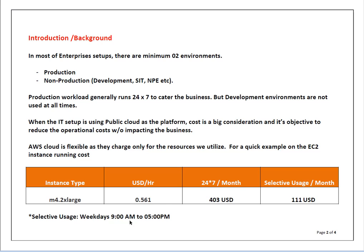Amazon cloud is very flexible as they charge only for the resources we utilize. For a quick example, on one EC2 instance type I have chosen M4.2xlarge. The per-hour cost of M4.2xlarge is 0.561 US dollars. If I calculate it monthly when my instance runs 24 by 7, it comes to 403 US dollars. But if I am using this instance with selective timings, running it only on weekdays from 9 a.m. to 5 p.m., then it will cost me only 111 US dollars.